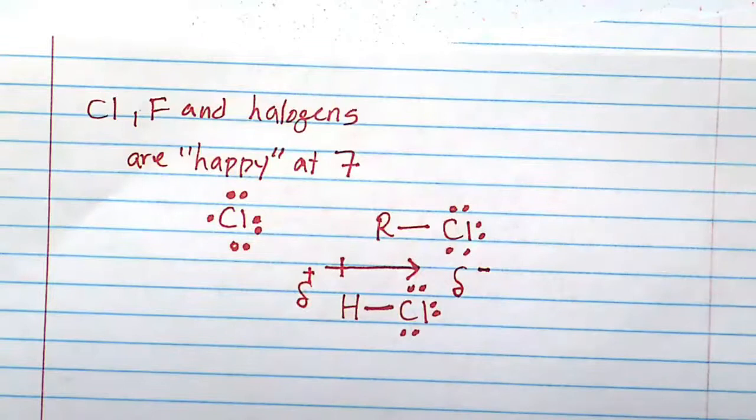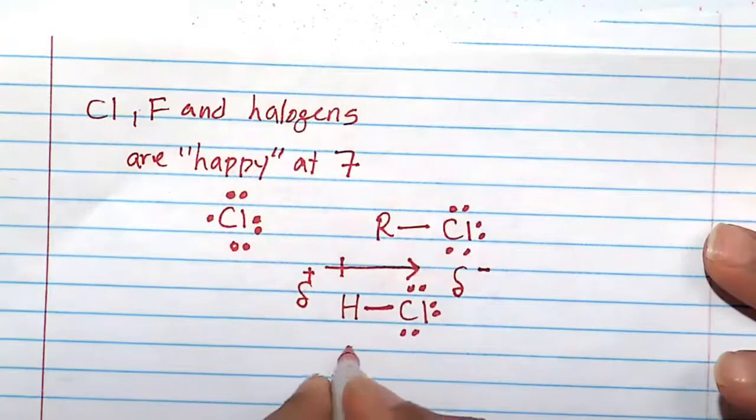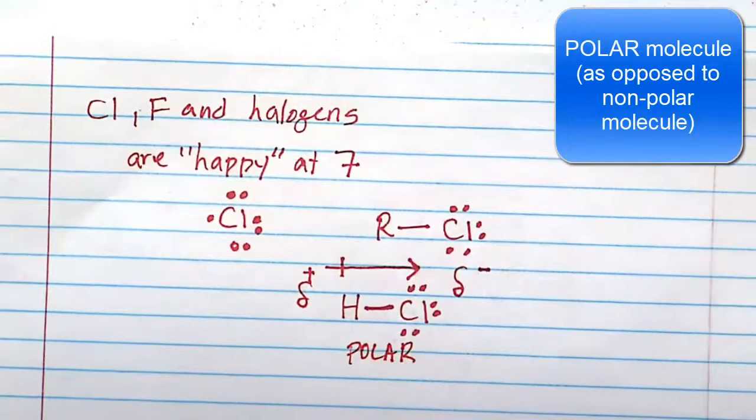Remember, this is partial. It's not a full positive charge. It's not a full negative charge. It doesn't have that power. But it's a partial negative charge and a partial positive charge within the end of the molecule. Such a molecule is called polar. And a lot of times, most halogen-containing molecules are polar.